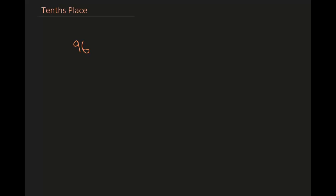Now, what is the tenths place? A lot of you might be thinking you know what the tenths place is. Well, let's say we have 96 — in this number the tens place would be 9. But we are thinking about tenths, with a 'th' here. So the tenths place is in a decimal. Let's say we have 0.79 — in this number, our tenths place would be the number right after the decimal. This is our tenths place: the 7.